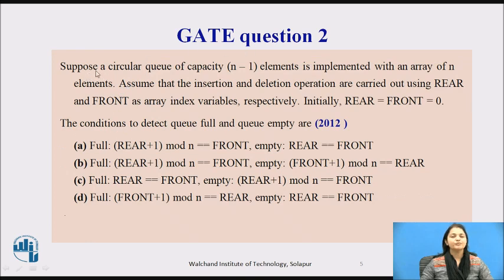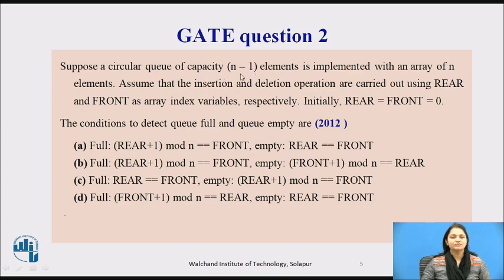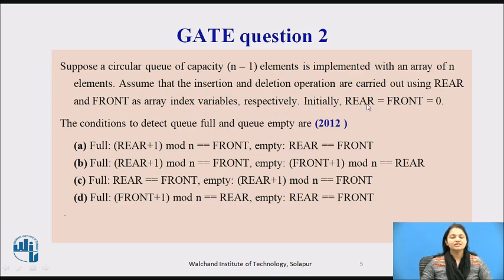Next, question number 2. Suppose a circular Queue of capacity n minus 1 elements is implemented with an array of n elements — meaning the Queue has capacity n and we can store from index 0 to n minus 1. Assume insertion and deletion operations are carried out using rear and front as array index variables respectively, where initially rear equals front equals 0.